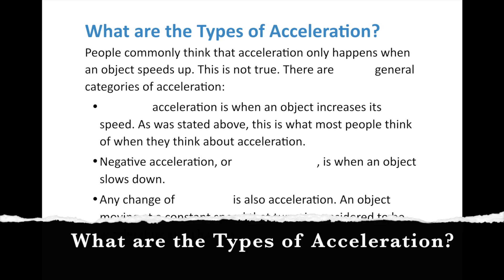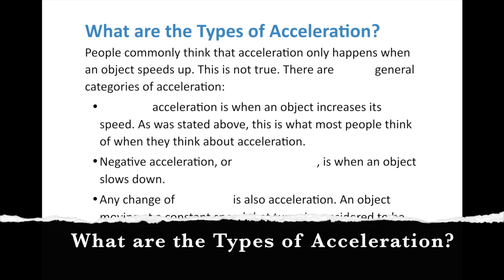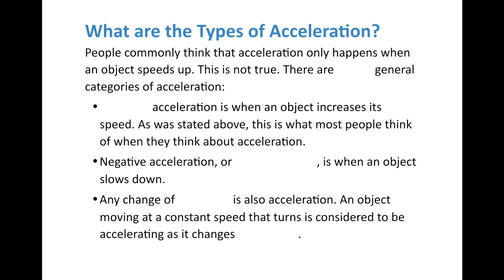Now let's talk about the types of acceleration. People commonly think acceleration only happens when an object speeds up, but that isn't the case. There are three general categories. The first is positive acceleration — when an object increases its speed. This is what most people think of when they hear 'acceleration,' and it's correct.